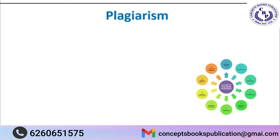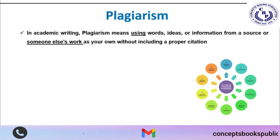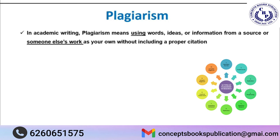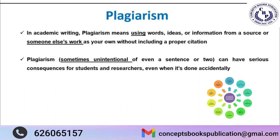Plagiarism is very important with regard to publication and academic writing. Plagiarism means using words, ideas, or information from a source or someone else's work without giving them credit — in simple terms, stealing someone else's work. For example, taking information from an article and including it without citing their work is plagiarism. Sometimes plagiarism can also be unintentional, even for one or two sentences. For researchers and technical writers, it is important to know that plagiarism can create serious consequences when found.